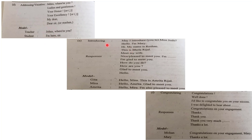The next type, the fifth type, is the introducing type. When they don't know you and you try to introduce someone to some other person or maybe yourself to some other person. Examples: may I introduce you to Miss Josie; hello, I'm Mary; hi, my name is Roshan; this is Bola Rizal; meet my wife. These are different types of examples you can use for introducing a person.